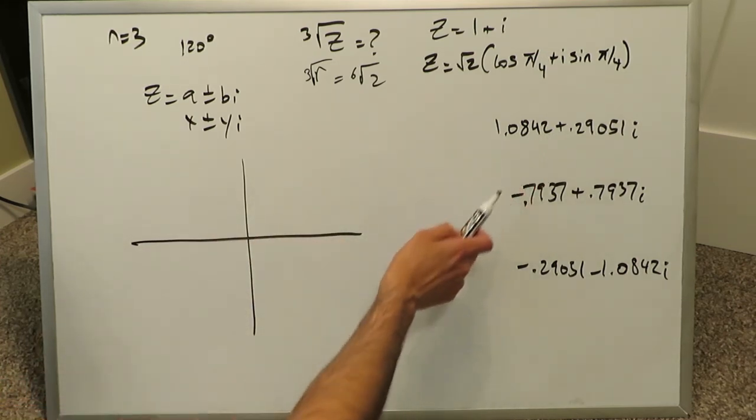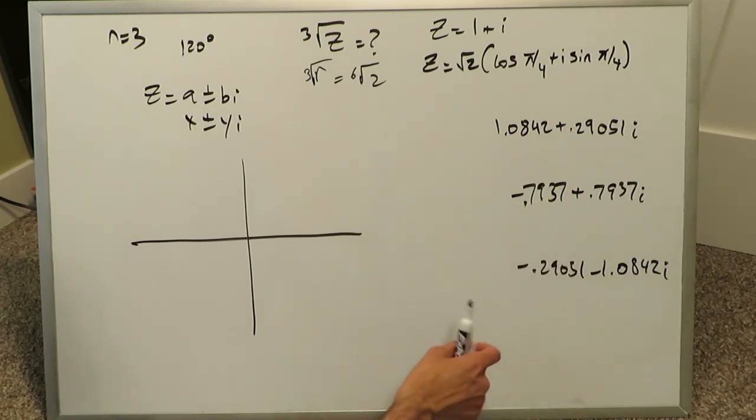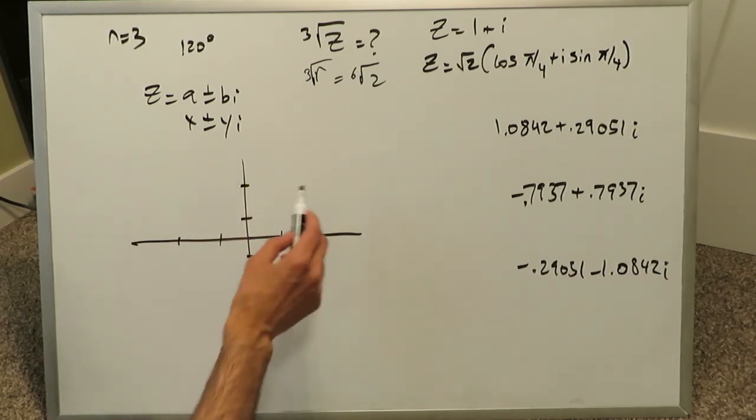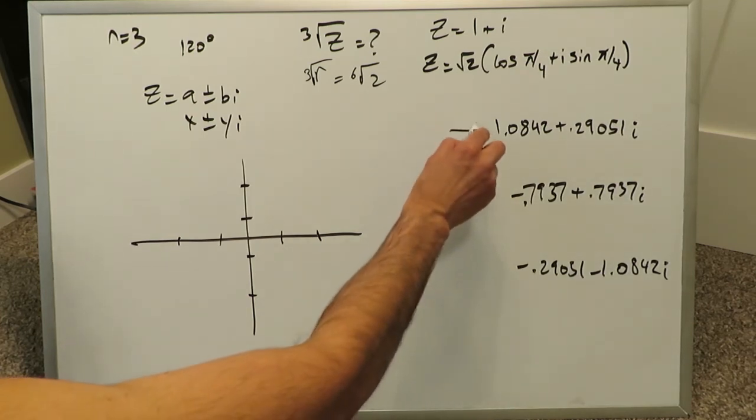Look here, you have a 1, you have a 0.29, minus 0.79, 0.79. You can see we have fractional values, but values are generally going no higher than 2. You can just draw 1 and 2 all across, and then you plot the first set of values.